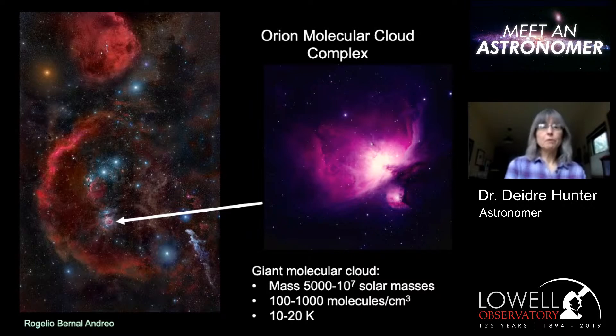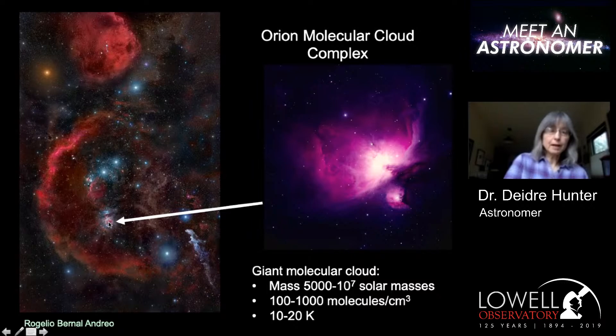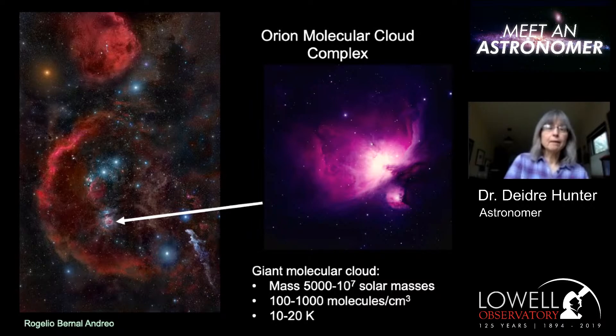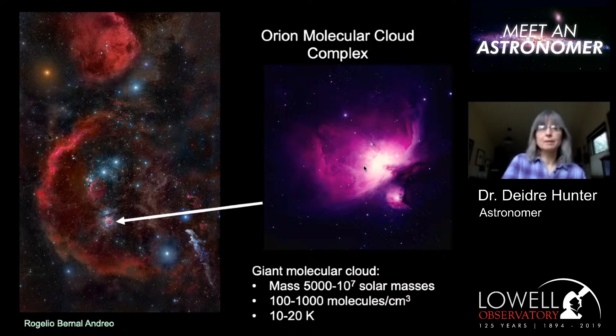This little part of the cloud, which we can actually see as a fuzzy patch just by eye if you're in a dark place, is actually the Orion Nebula shown here on the right. A group of stars have formed right in here in the nebula, and the massive stars that formed have ionized the gas leftover around it to produce the nebula — which is just this little blip on this huge molecular cloud complex.